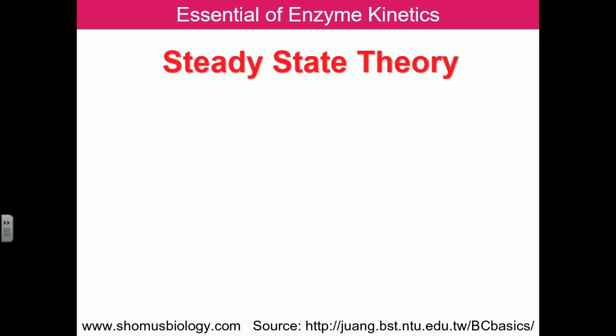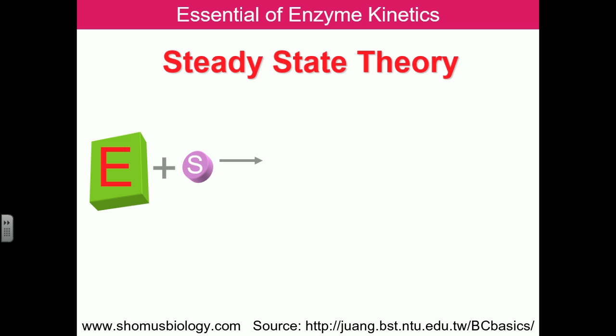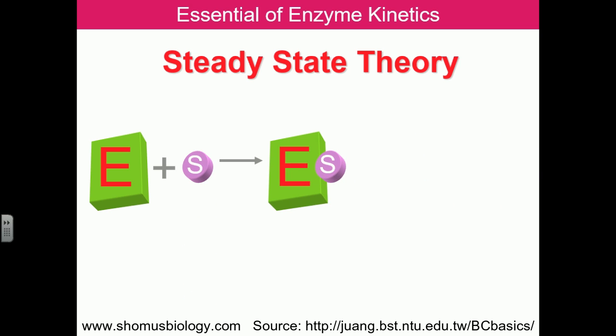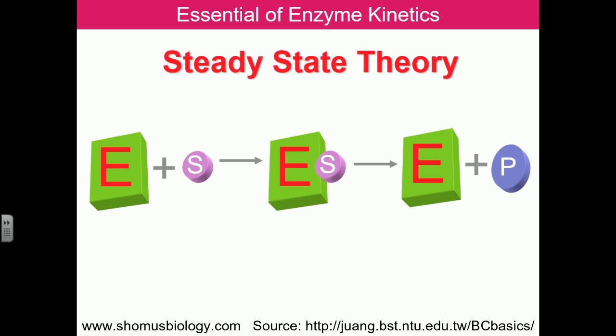Michaelis and Menten proved that the enzyme and substrate must come together to form the enzyme-substrate complex. Once the enzyme-substrate complex forms, it is converted into products. The more enzyme-substrate complex that forms, the better the chances that substrate will be converted to product.